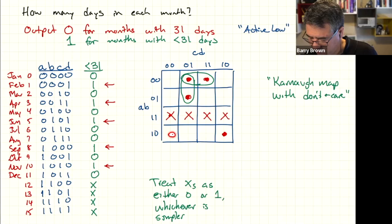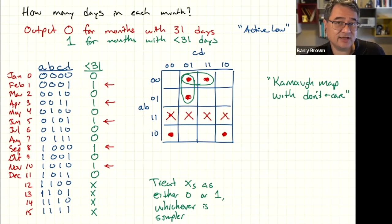But now take a look at this dot over here in the lower left-hand corner. Remember, I could pair it up with the one to its right, which is over on the other side, and that would make a two-by-one circle. But I could expand it out to be a two-by-two circle, grab those two x's above, and treat those boxes as though there were dots there. Because when I do that, I essentially eliminate one of the variables from that term. Remember, as the boxes get bigger, the number of variables for that term gets smaller.